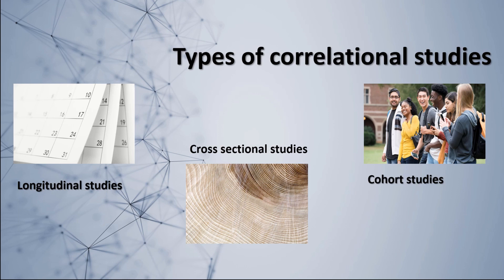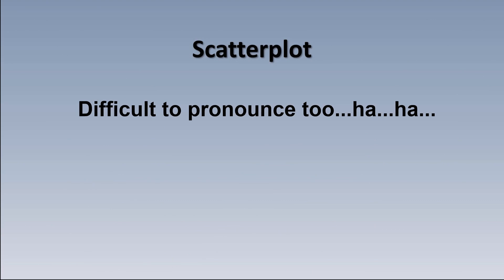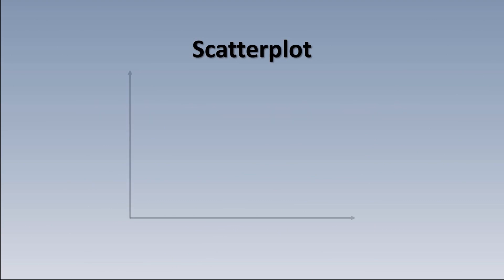I want to move on now and talk about scatter plots. A scatter plot is a visual way of showing if and how strongly two variables are related to one another. It consists of two lines, each representing a variable. The vertical line is called the y-axis, the horizontal line is called the x-axis, and where they meet is the zero point — where both variables being measured equal zero.